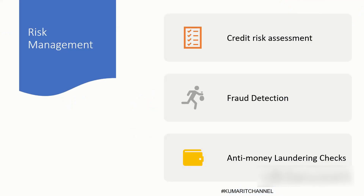Now let's talk about the risk management use case. These programs are used for risk management in banking — that can be credit risk assessment, fraud detection, or AML, which is anti-money laundering checks. The COBOL programs are written to analyze customer data and transaction patterns and perform rule-based checks. There will be a set of rules defined to identify any potential risk or fraudulent activities. While data warehouse systems also do analytics, there are COBOL programs at the backend that perform risk management activities in banking systems.